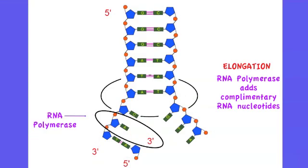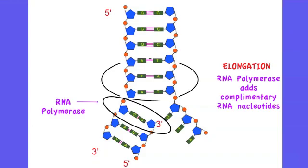A piece of mRNA is formed by the enzyme RNA polymerase by adding complementary RNA nucleotides to the template strand of the DNA.